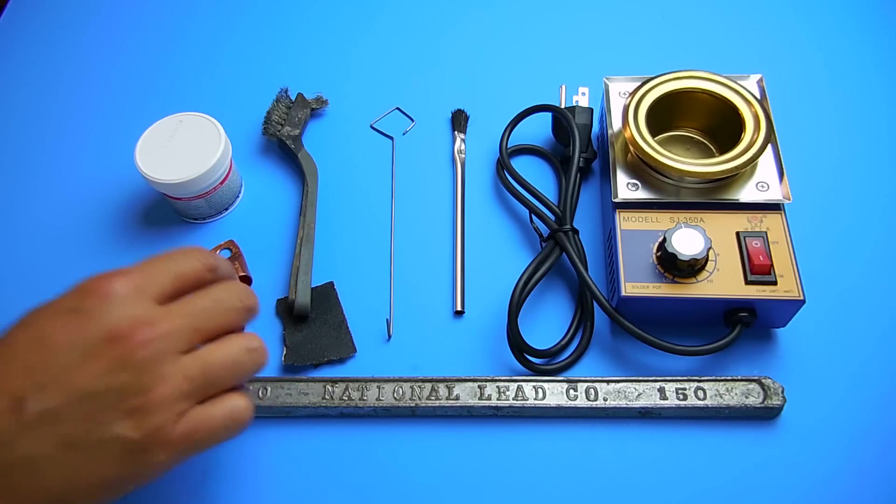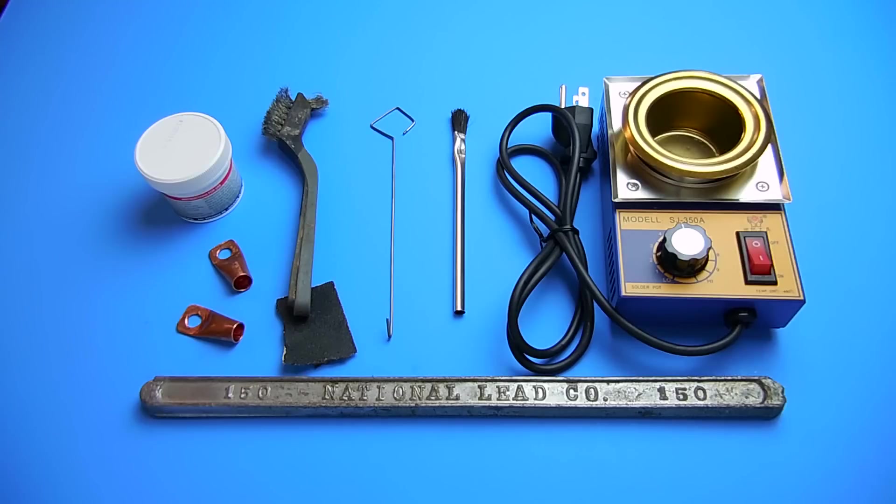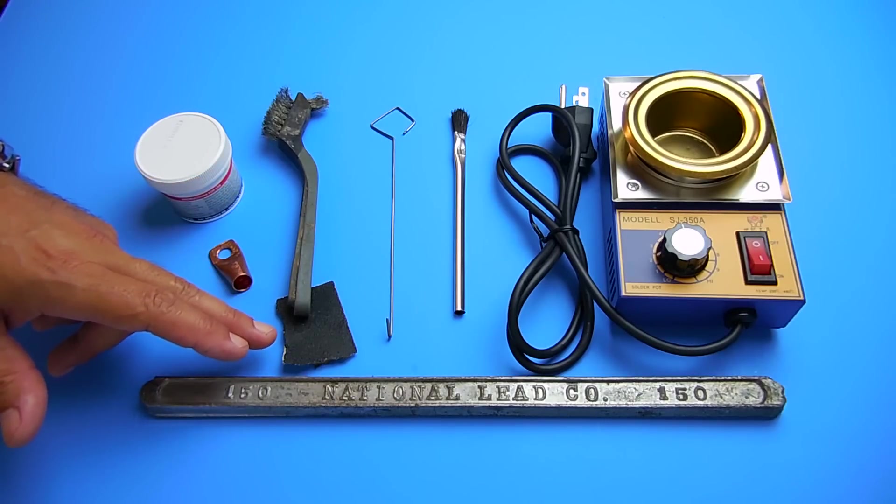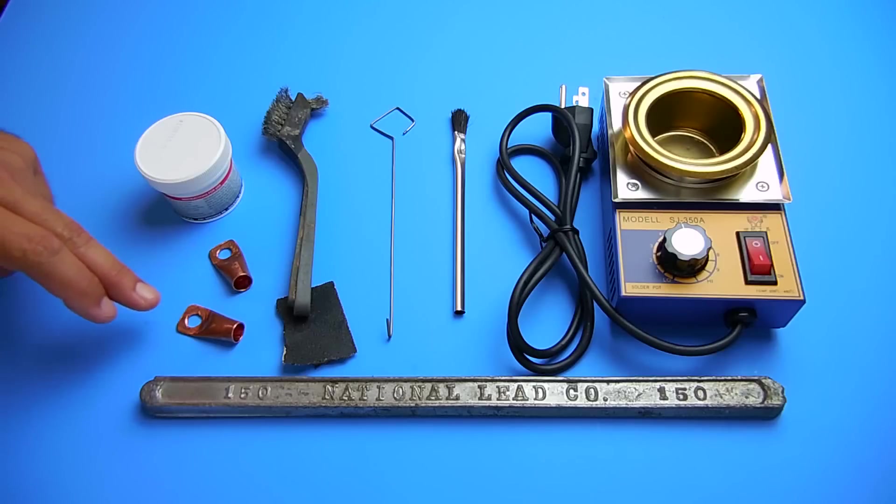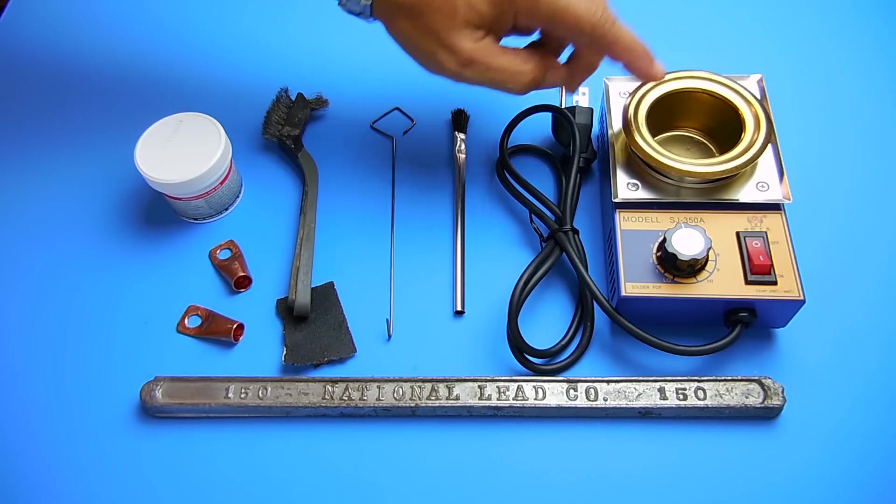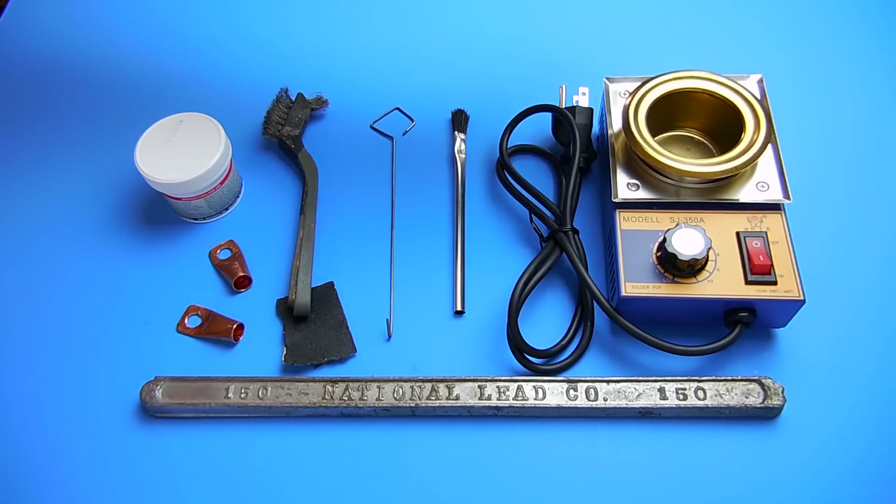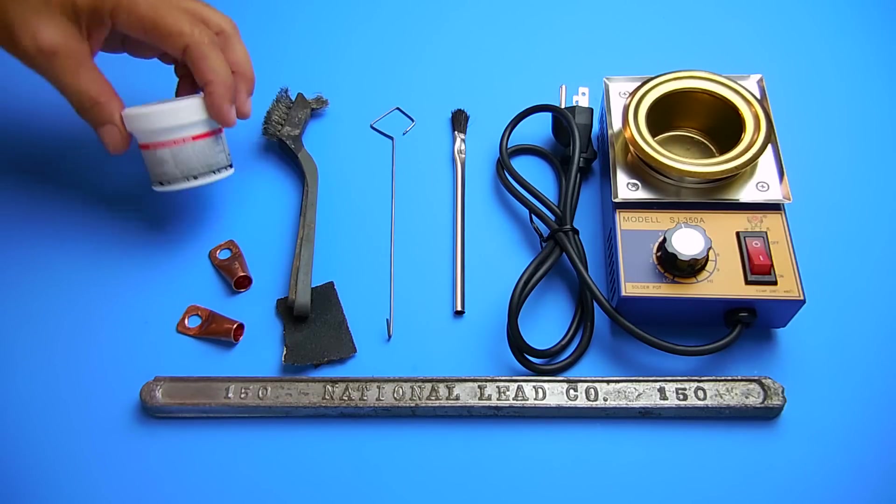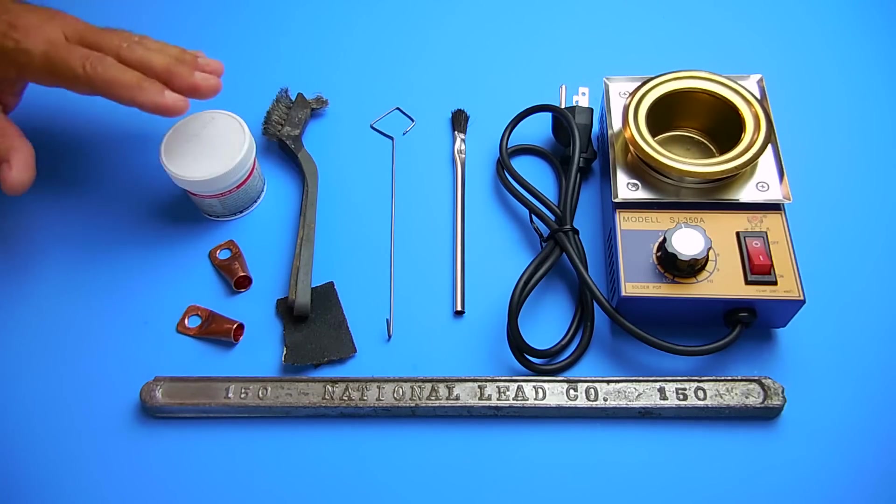If you have liquid rosin and you don't mind using some of it, then what you can do once you clean each one of these till they're bright and shiny using a stainless steel brush and emery cloth like you see here, is dip the connector using the hook into the liquid rosin flux and then dip it into the molten alloy. Once it's dipped in, you lift it up, allow it to cool, and then you're ready to go.